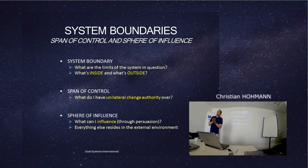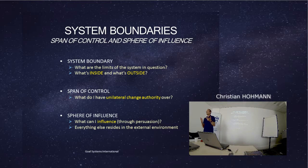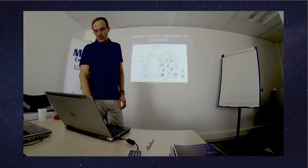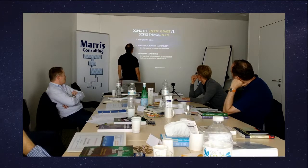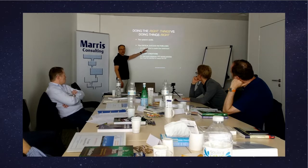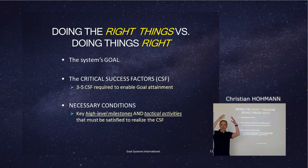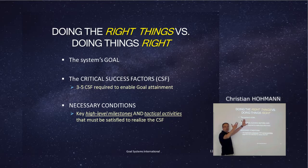What is not in the span of control and not in the sphere of influence is outside the system, and we should consider it as constraints — regulation, the weather, the law — things totally beyond our control. This matters for goal trees because the goal and the critical success factors will not be the same depending on whether you consider your system within your span of control or sphere of influence, since you have nested structures.